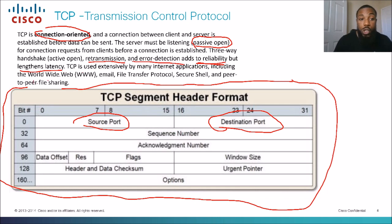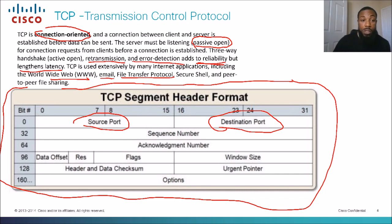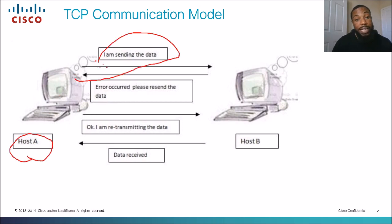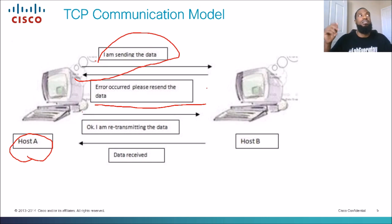TCP is used extensively by internet applications, including the worldwide web, email, FTP, SSH, and peer-to-peer file sharing. The sender sends data, and if the receiver doesn't get it and an error occurs, the receiver will request a retransmission. That's where sequence numbers and acknowledgement numbers come into play — packets are numbered sequentially, and if one gets dropped, a retransmission request is sent.